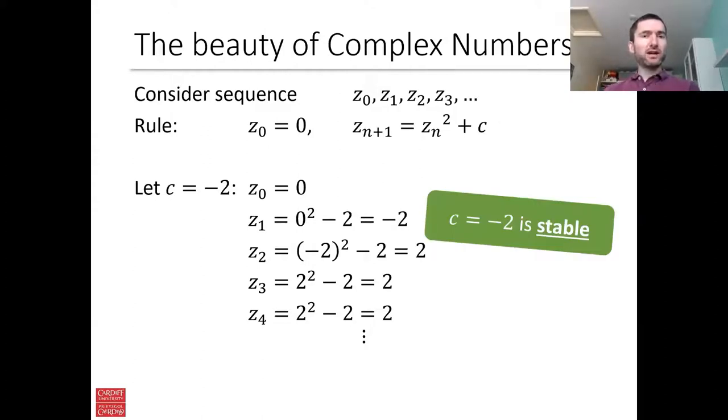So this sequence doesn't blow up and so we call this value of c stable. So stable values of c are values where the sequence doesn't blow up. Now they may jump around. Here they don't. Here they just stay at 2, but in most cases they will jump around and move around but they don't blow up. So we call them stable.